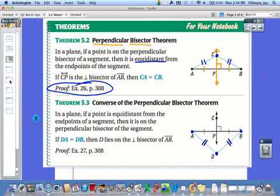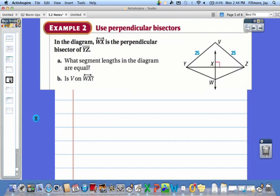But let's use this to answer a couple of questions. In this diagram, we know that line WX is the perpendicular bisector of YZ, which means it forms a right angle and we have two congruent halves here. So for part A, what segment lengths in the diagram are equal? Well, first of all, since this is the perpendicular bisector, we know the length of YX is equal to the length of ZX because it passes through the midpoint, so those two halves are going to be equal.